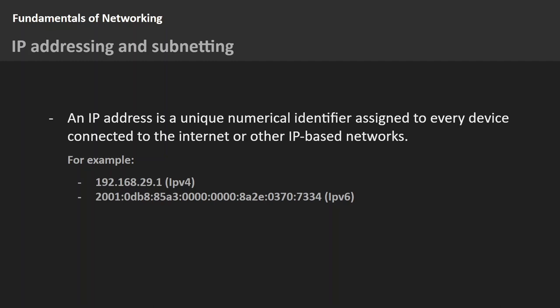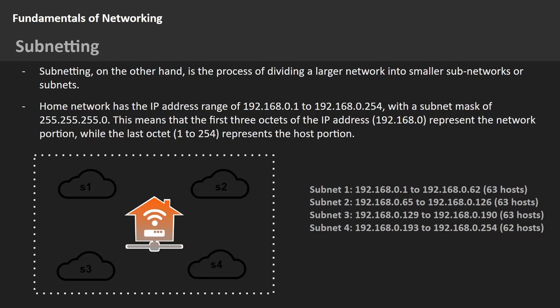In IPv4 we are limited to around 3.5 billion addresses, but IPv6 provides a much larger range. That's why IPv6 was introduced. In summary, an IP address is an internet protocol that helps a device or node uniquely identify itself over the internet or a network for basic communications.